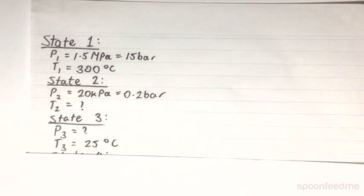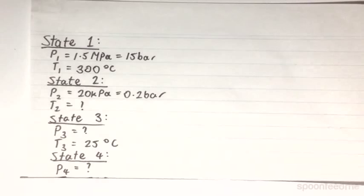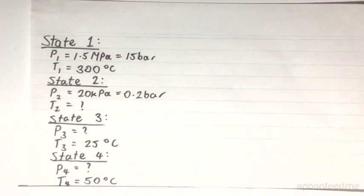At state 3, our pressure is unknown, but our temperature is given to be 25 degrees Celsius. And similarly, at state 4, our pressure is unknown, but our temperature is given to be at 50 degrees Celsius.